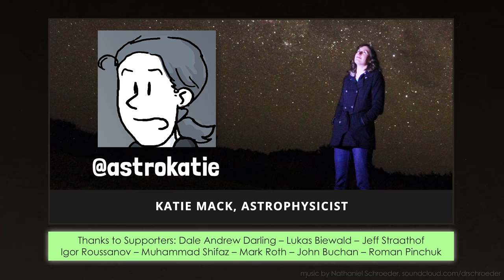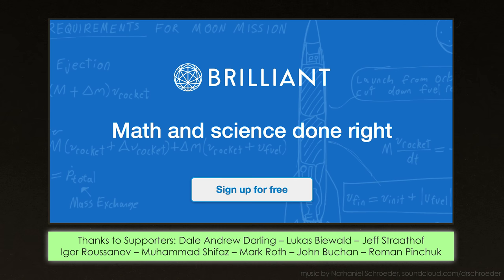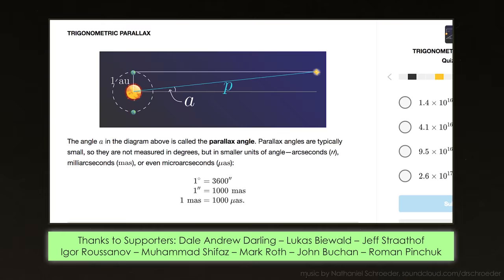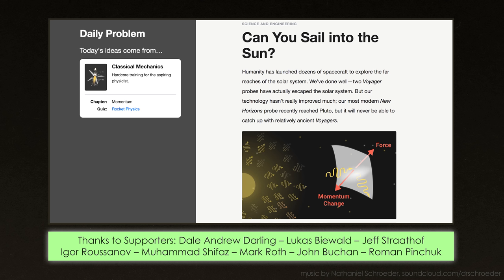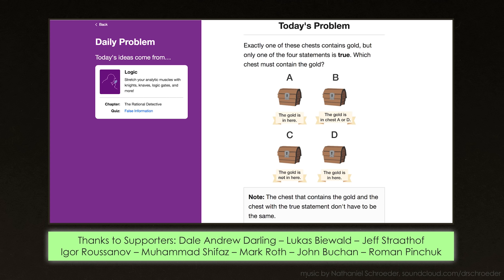Now, if you've ever wondered how we can know things like how far away distant stars and galaxies are, Brilliant.org, this video's sponsor, has an interactive course on just that, exploring trigonometric parallax, standard candles, supernovae, and more. Or if you just want a small daily dose of science, Brilliant has a short problem of the day, every day, that gives you just enough background information to figure out a math or science puzzle. In fact, here's one about measuring the distance to the stars.